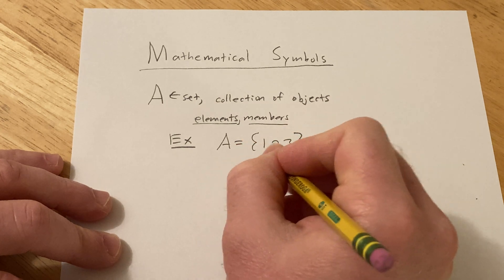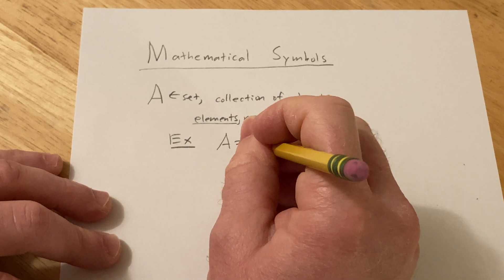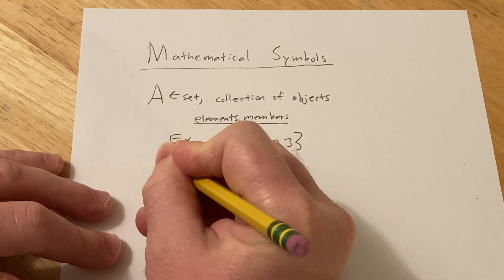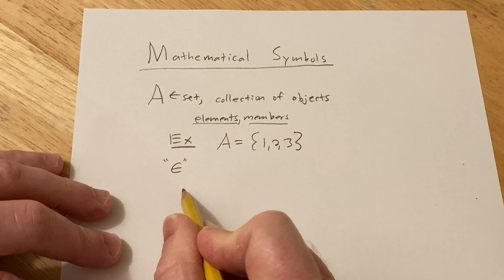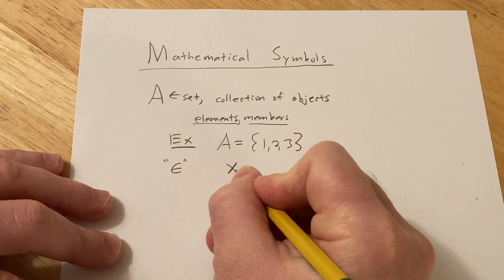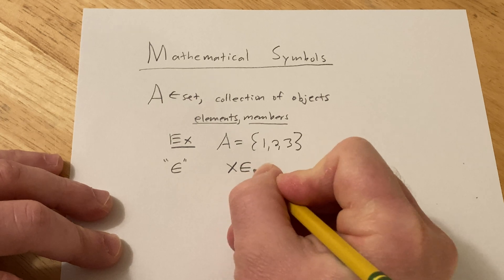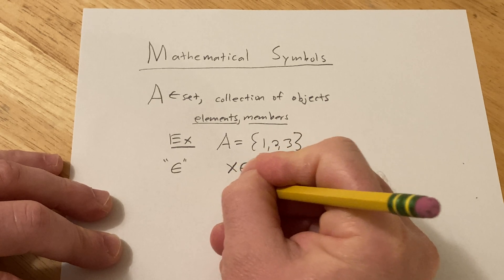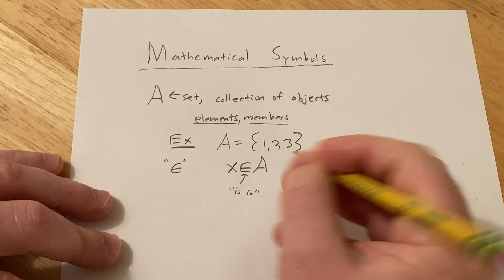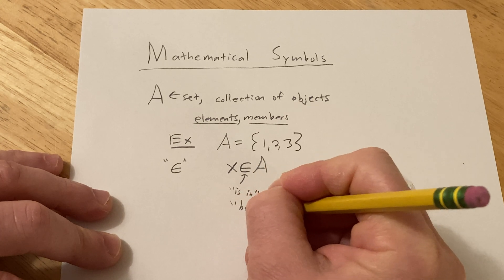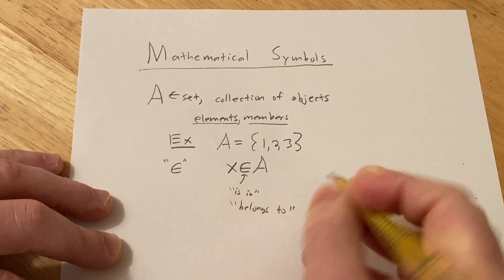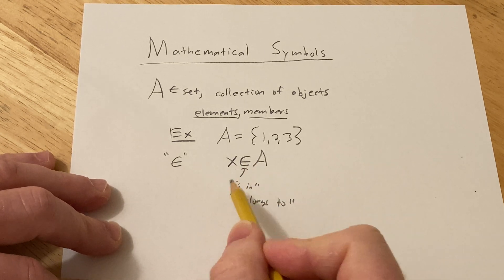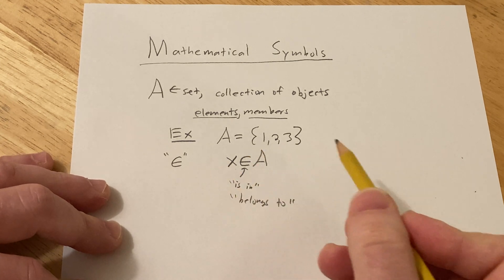You need some notation to indicate what members are in the set. You use this symbol here — it looks like a little curved symbol. You say 'x is an element of A' or 'x is in A.' That's how you read it: 'is in,' 'is an element of,' 'belongs to.' So there are various ways to say the same thing — x belongs to A, x is in A, x is a member of A, x is an element of A.